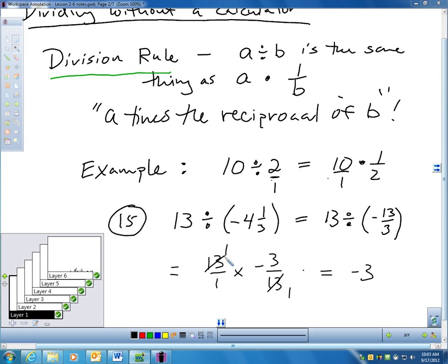Hey, I got an easy cancellation. I have 13 on top and 13 on the bottom. If I divide each of those by 13, I get 1s. And this is easy now. This is 1 times negative 3, which is negative 3. I'm not sure that I would have seen that with trying to divide it. I can easily do it by multiplying it.